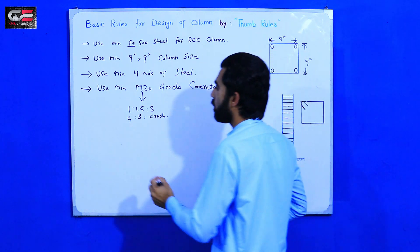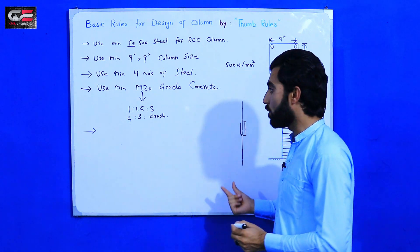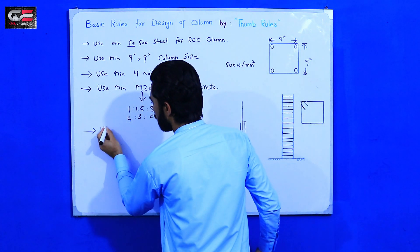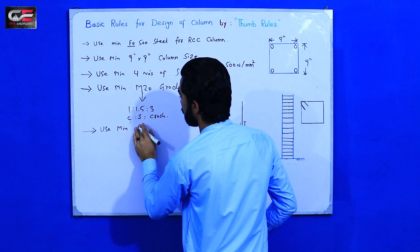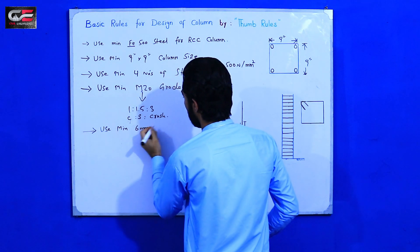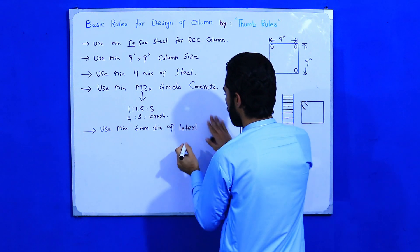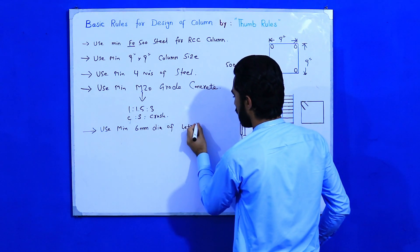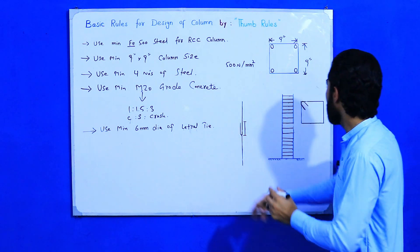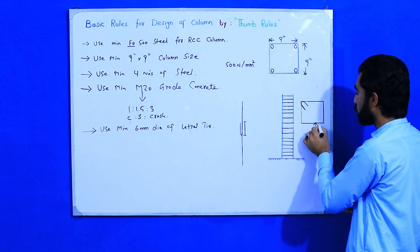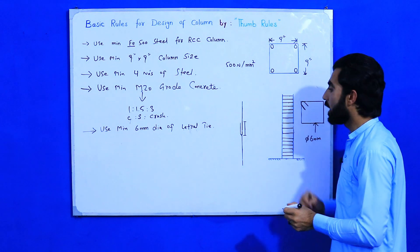Now for reinforcement details, especially for lateral ties and overlapping length. Use a minimum 6 millimeter diameter of lateral tie. You can see this is a lateral tie — its diameter should not be less than 6 mm. Use minimum 6 millimeter diameter of steel for lateral ties.